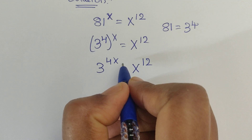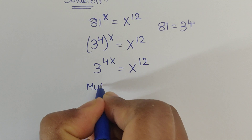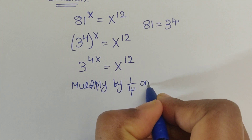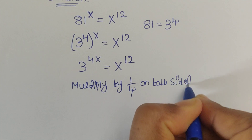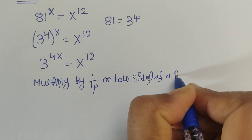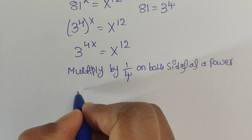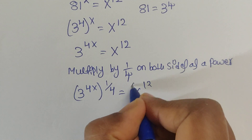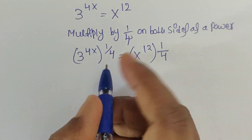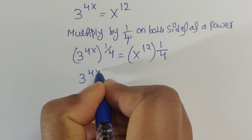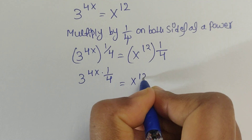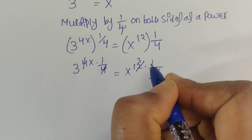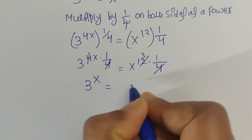Now we multiply both sides by 1/4 as a power. So 3 to the power of 4x times 1/4 equals x to the power of 12 times 1/4. The 4 cancels, and 4 times 3 equals 12, so then we get 3 to the power of x equal to x to the power of 3.